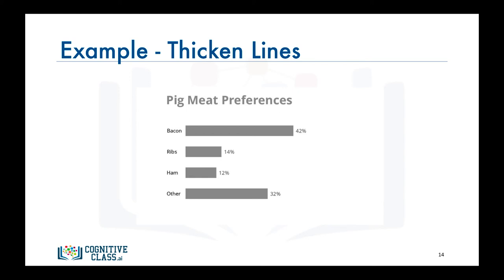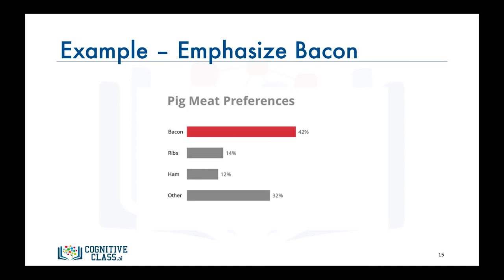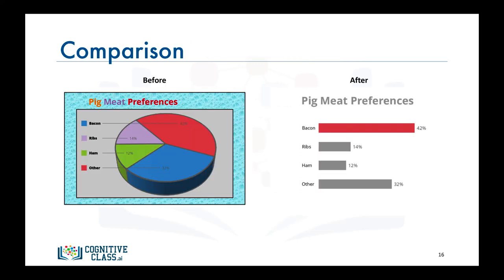And finally, let's emphasize bacon so that it stands out among the other types of pig meat. Now let's juxtapose the pie chart and the bar graph and compare which is better and easy to understand. I hope that we unanimously agree that the bar graph is the better of the two.